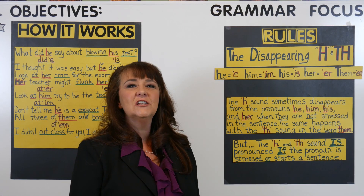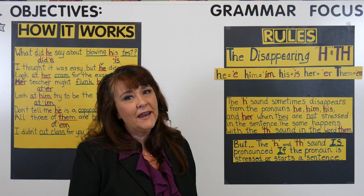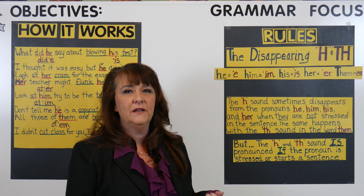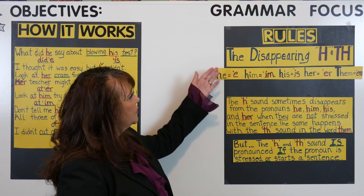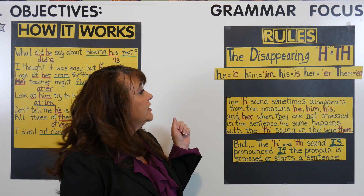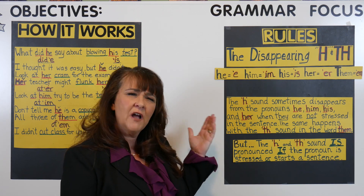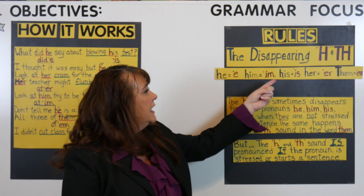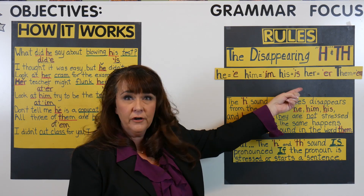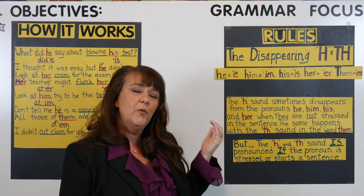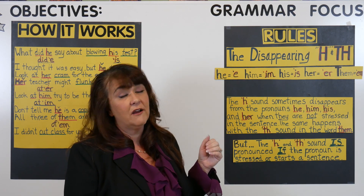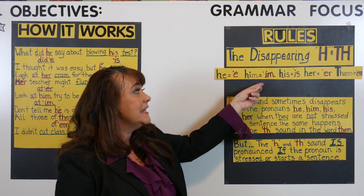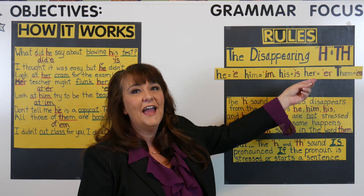Let's look at the rules of how and when the H or TH is most commonly found in the words he, him, his, her, and them. When the H or TH sound disappears, it sounds like: e, im, is, er, em.